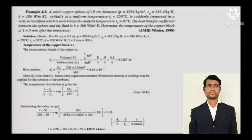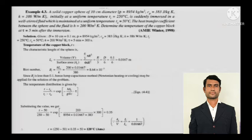Now, the temperature of the copper block T — the characteristic length is already calculated. The Biot number is again the judging criteria. Unless they explicitly mention lumped parameter, you need to first evaluate the Biot number. Judging by the Biot number, you simply need to calculate the temperature; everything is given to you.